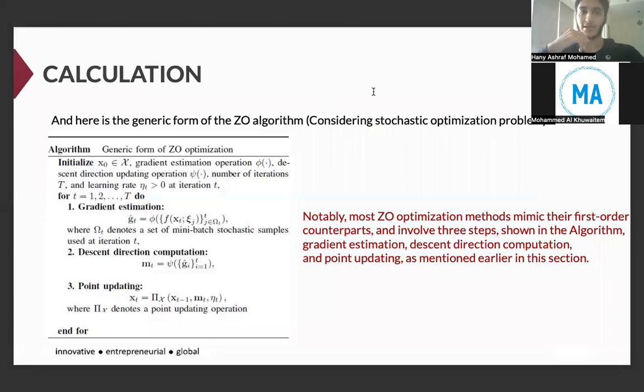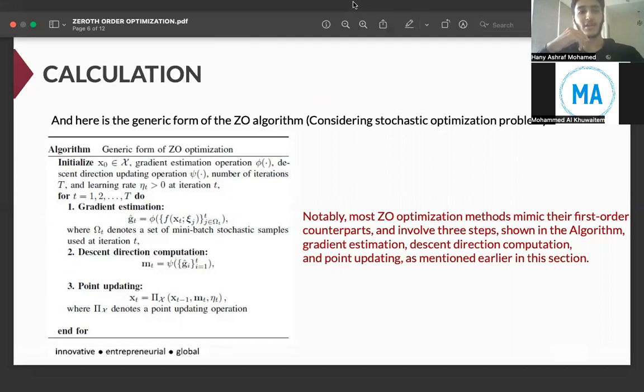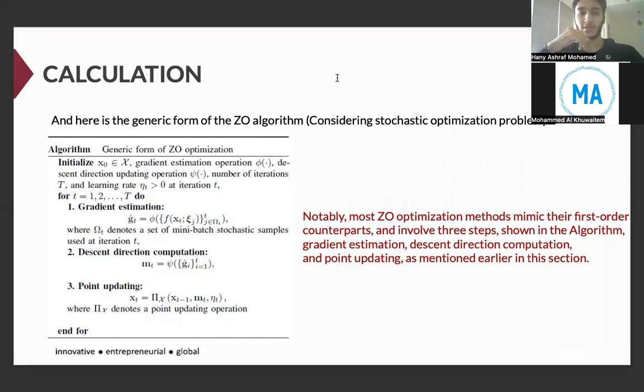And here is the generic form of the zero-order algorithm, considering stochastic optimization problems. As shown here, there is a loop, and it runs for a number of iterations t. In each iteration, the three major steps are performed: number one, gradient estimation; two, descent direction computation; and three, point updating. We want to emphasize that most zero-order optimization methods mimic their first-order counterparts and involve three steps shown in the algorithm: gradient estimation, descent direction computation, and point updating, as mentioned earlier in this section.